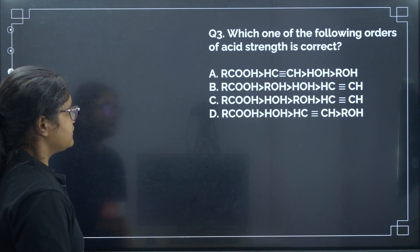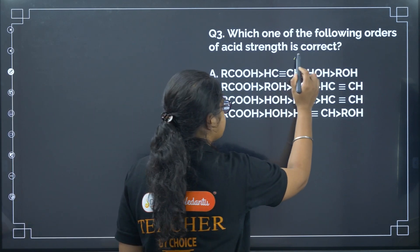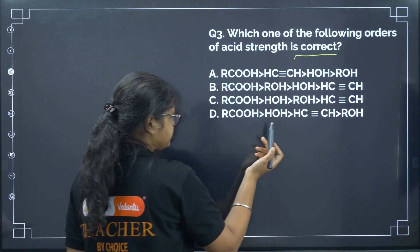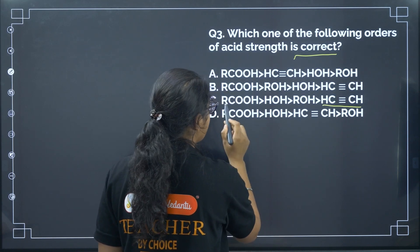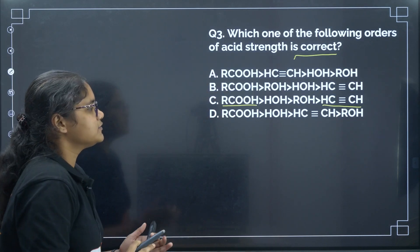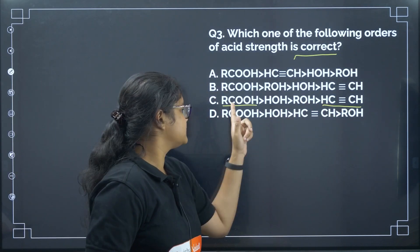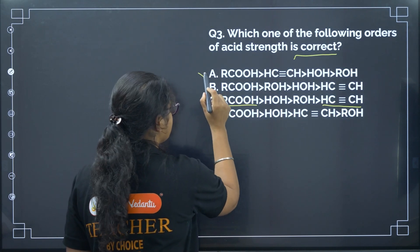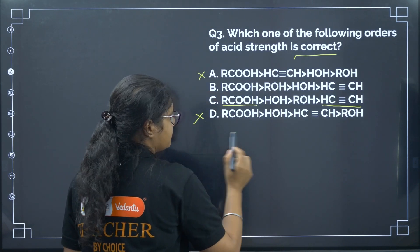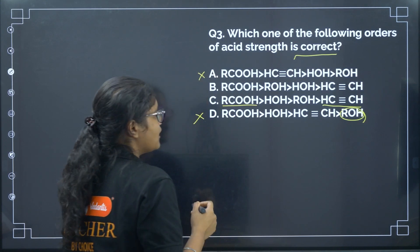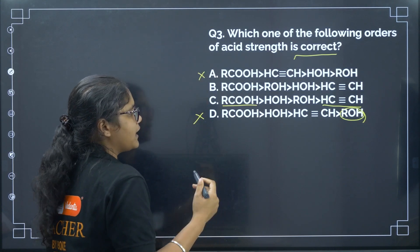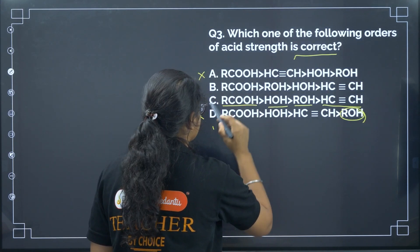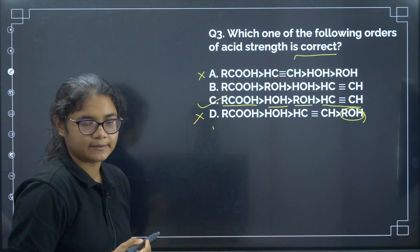Next: which of the following orders of acidic strength is correct? Terminal alkynes are the least acidic and RCOOH is the most acidic. We can eliminate options A and D because ROH is placed incorrectly. Between water and ROH, water is more acidic. Correct answer: option C.